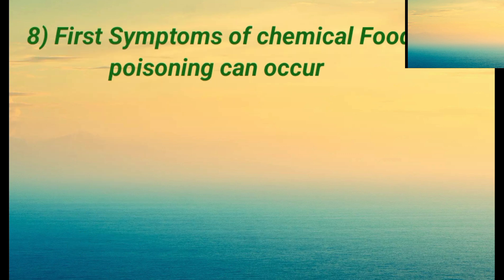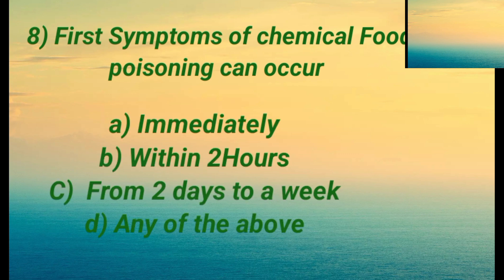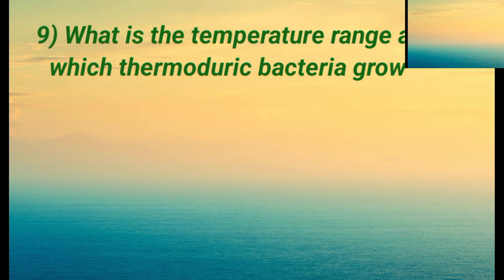Question eight: first symptoms of chemical food poisoning can occur — options include from two days to a week, or any of the above. The right answer is: immediately.